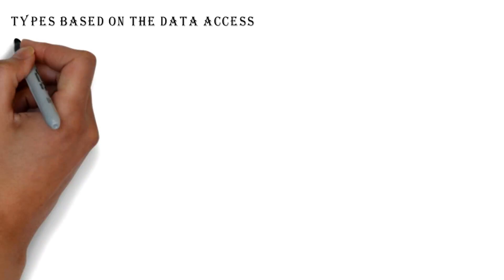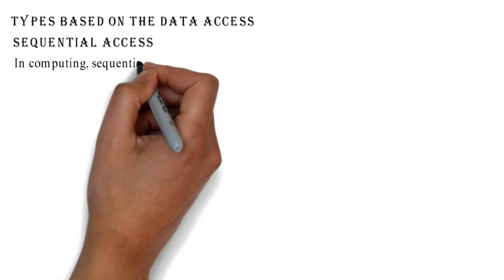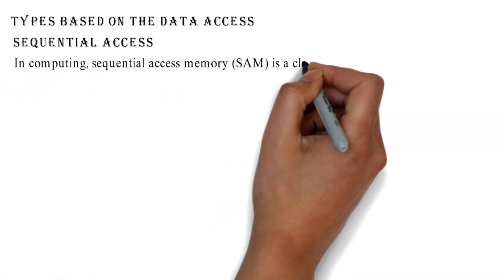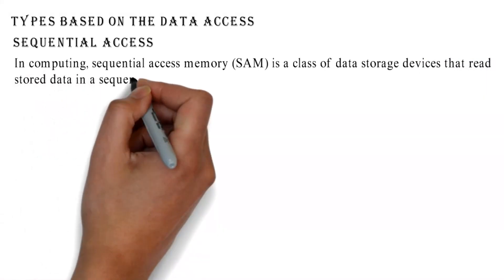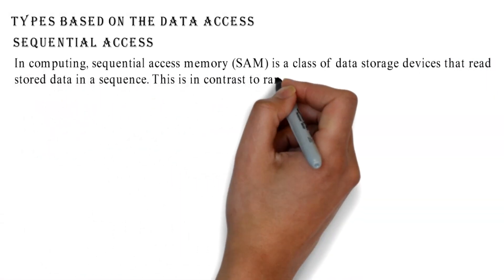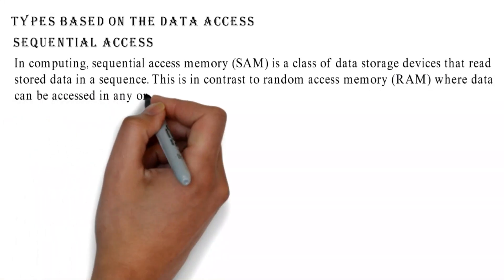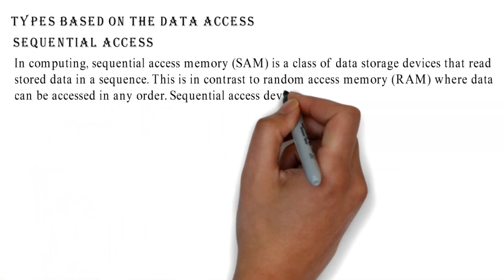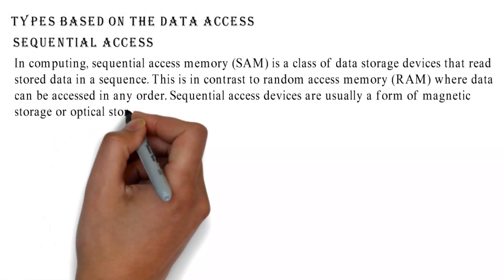Types based on the data access: Sequential access. In computing, sequential access memory is a class of data storage devices that read stored data in a sequence. This is in contrast to random access memory, where data can be accessed in any order. Sequential access devices are usually a form of magnetic storage or optical storage.